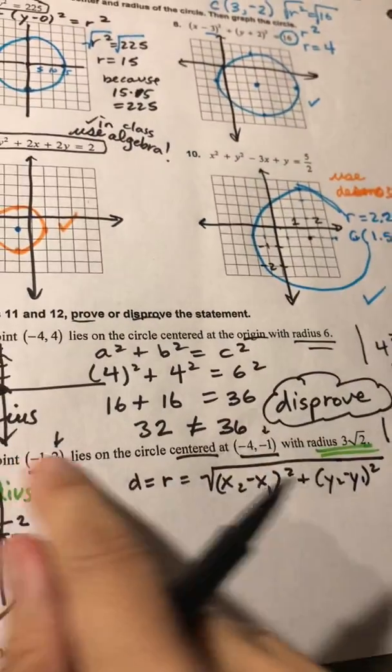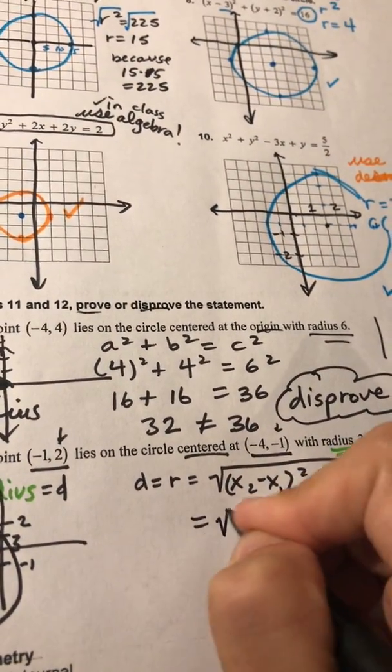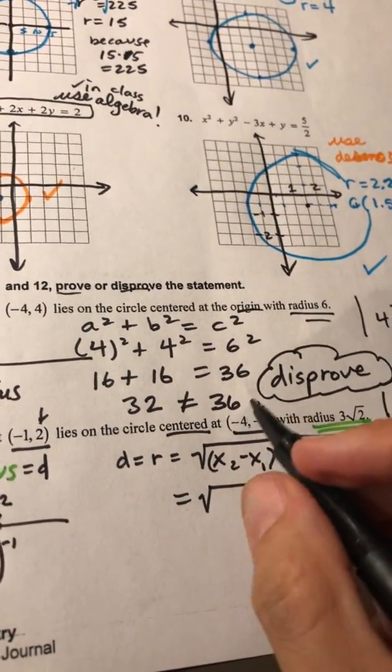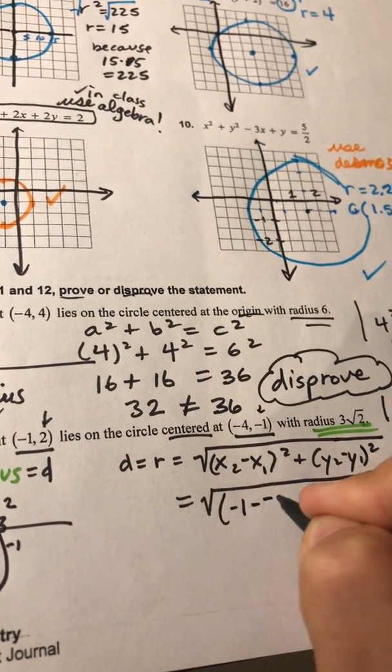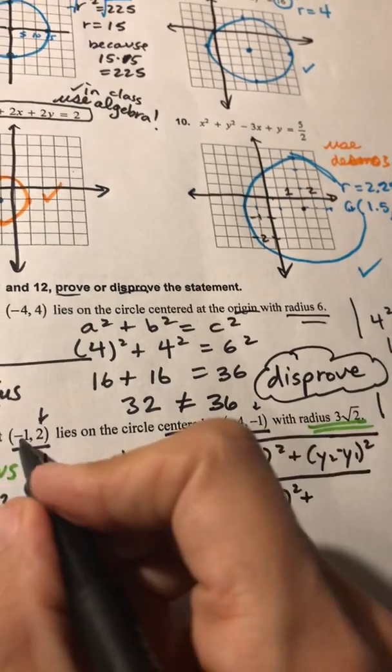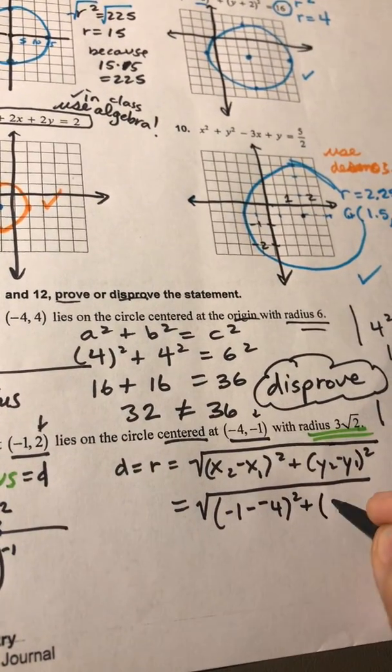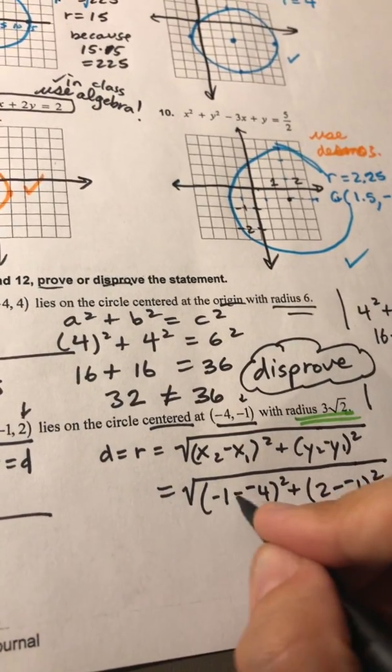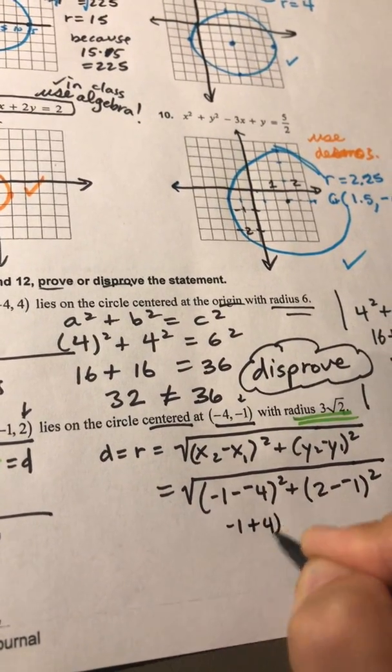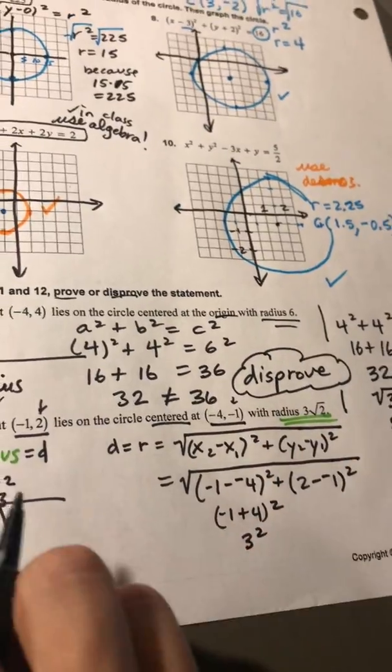So maybe pause the video and try to find the distance between the points and then see if you got it right. The x values, if I subtract them, negative 1 minus a negative 4 squared. The y values, if I subtract them, 2 minus a negative 1 squared. That'd be negative 1 plus 4. So it was 3.